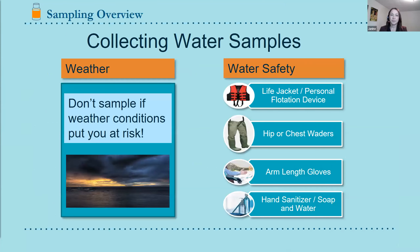Personal safety is critical when collecting samples. If weather conditions are poor — lightning, waves, or other hazards — don't sample; you can go next week. Collection procedures reference water safety equipment including life jackets, hip or chest waders, arm-length gloves (especially useful if a cyanobacterial bloom is present that could contain skin-irritating compounds), and access to soap, water, or hand sanitizer following collection.